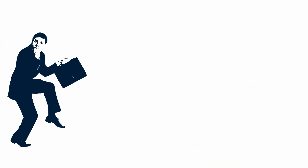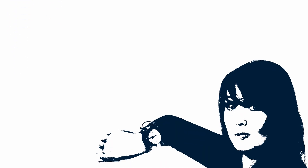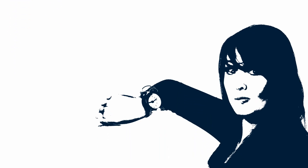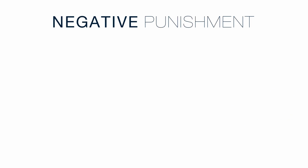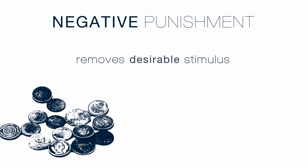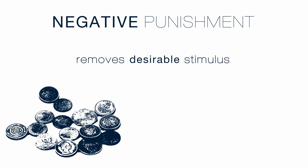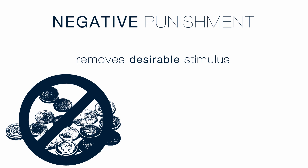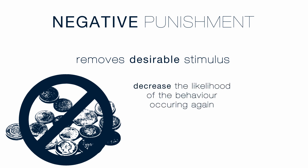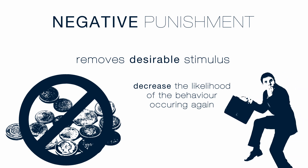Alternatively, you turn up late to work after a late night drinking with your friends, and your boss may tell you off for being late and dock your wage accordingly. In this case we see negative punishment taking place as the boss removes the desirable stimulus of money away from the subject to decrease the likelihood of the behaviour occurring again, in this case being late for work.